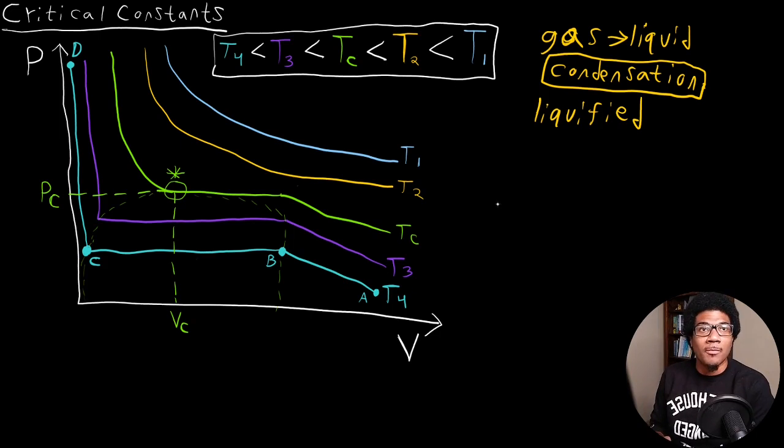These are the state variables where it's possible for gas to be liquefied. So specifically the critical temperature, critical volume, and critical pressure.